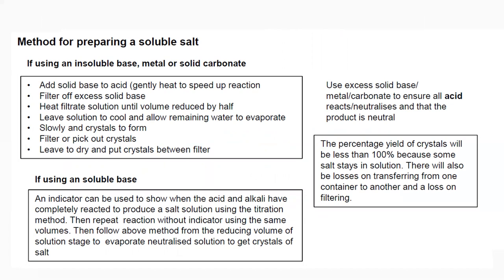For the practical steps of preparing a soluble salt using an insoluble base, metal, or solid carbonate: first, fill a container with acid. Using a spatula, add the solid carbonate or metal oxide or metal to the acid.